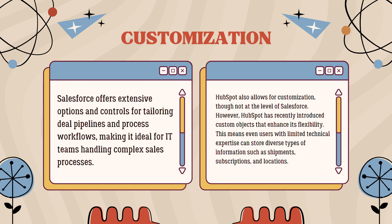In terms of customization, Salesforce offers extensive options and controls for tailoring deep pipelines and process workflows, making it ideal for IT teams handling complex sales processes. HubSpot also allows for customization, though not at the level of Salesforce. However, HubSpot has recently introduced custom objects that enhance its flexibility, meaning even users with limited technical expertise can store diverse types of information such as shipments, subscriptions, and locations.